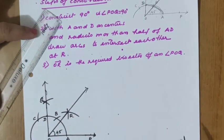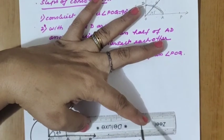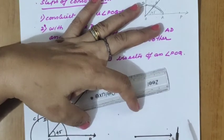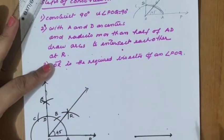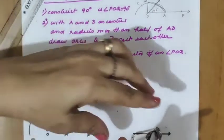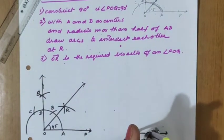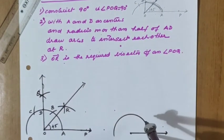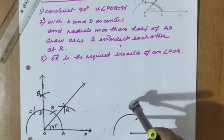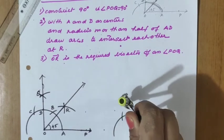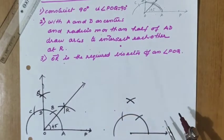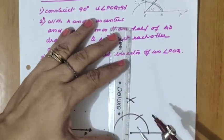OR is the required arc. You can take the measurement and check that it equals 45 degrees. Let me repeat the steps once more. Ray OP is given. With O as center, draw the 90 degree construction — draw a semicircle. We get point A, then B. With B and C we get two more arcs, and we get Q, completing the 90 degree angle.